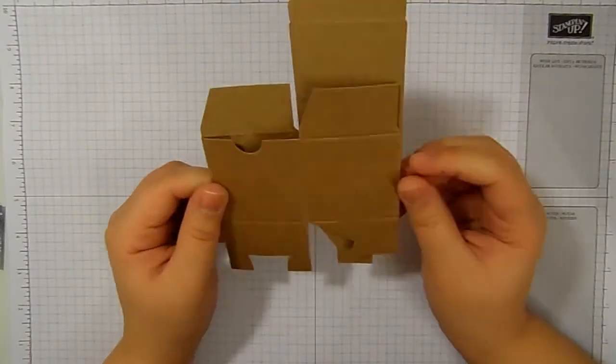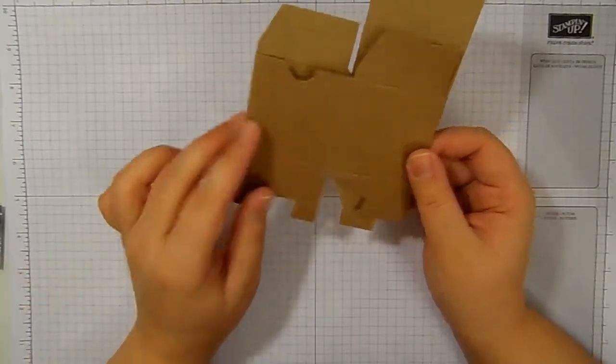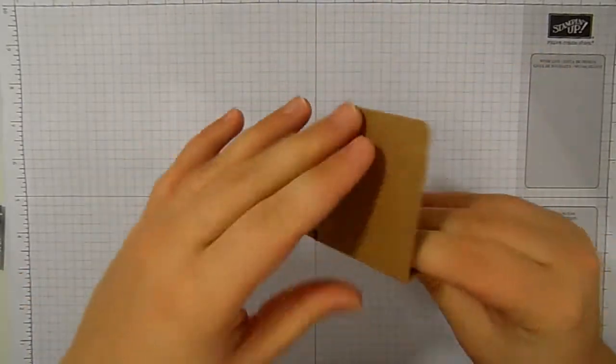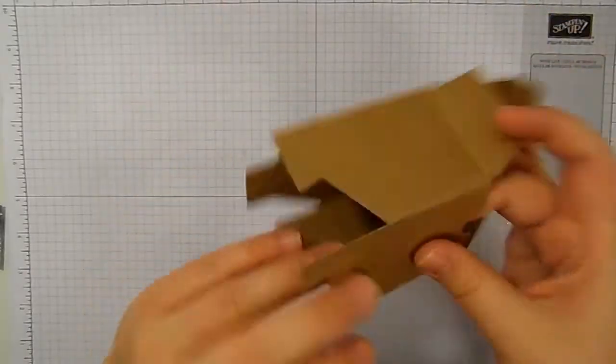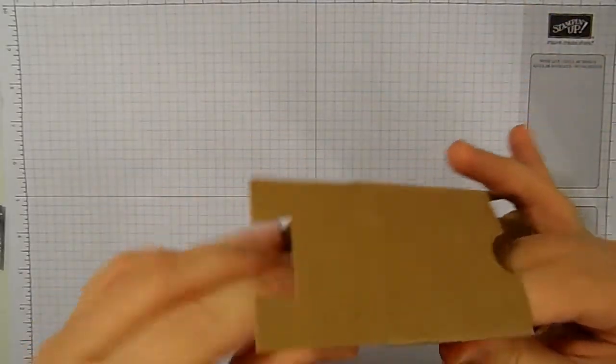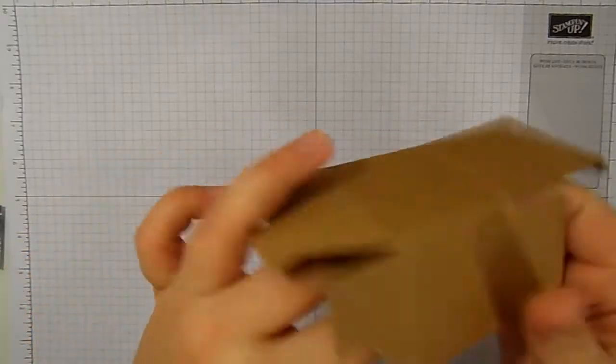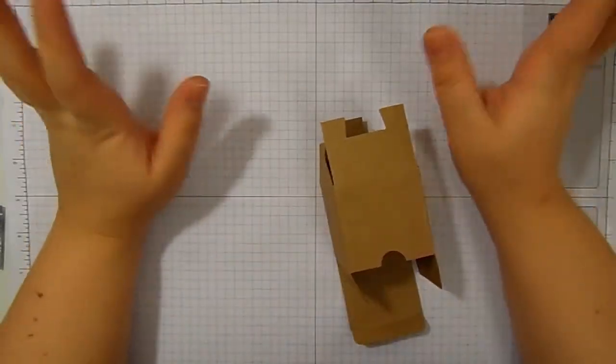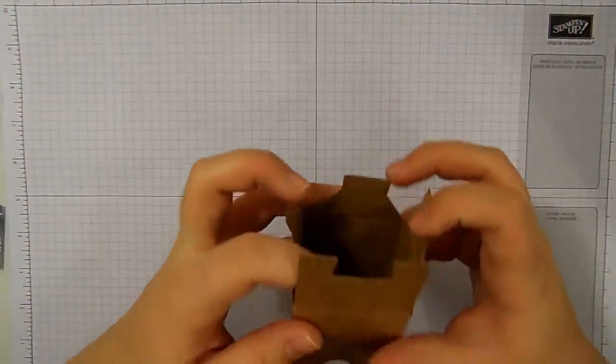They come folded like that and they're really super easy to assemble. So all you've got to do is fold on all of the score lines. It's a quick and easy project. The previous 24 took me about an hour to put together.